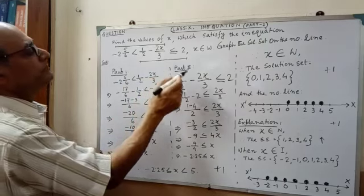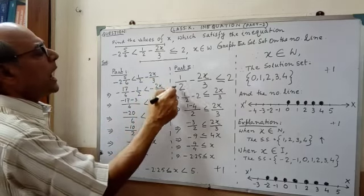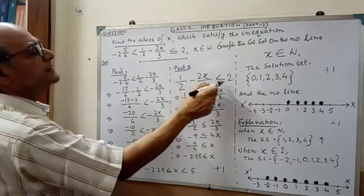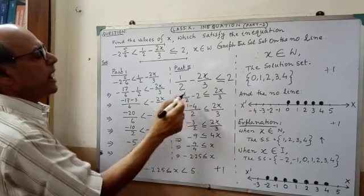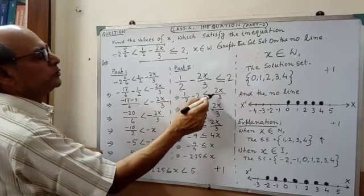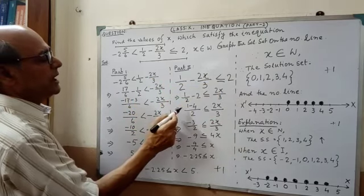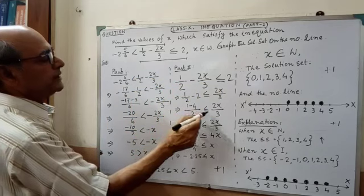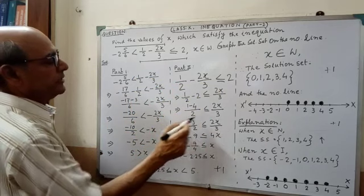Next, the second part: half minus 2x by 3, less than equal to 2. Half minus 2, less than equal to 2x by 3. 1 minus 4 by 2, less than equal to 2x by 3.